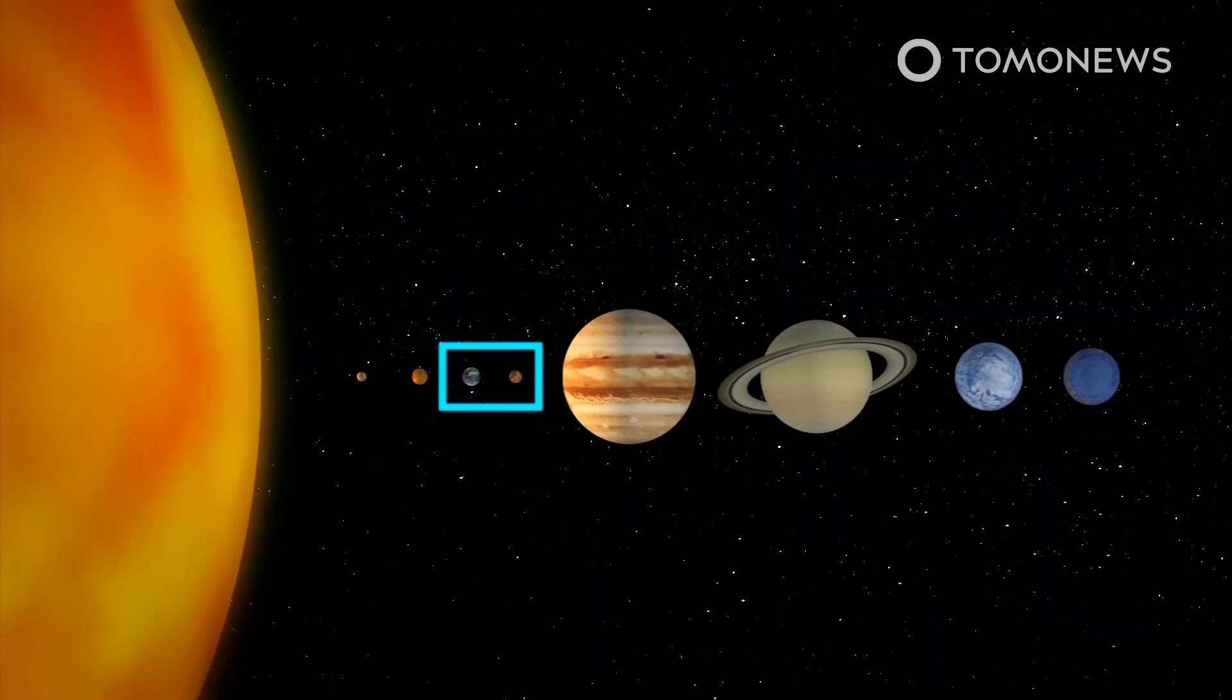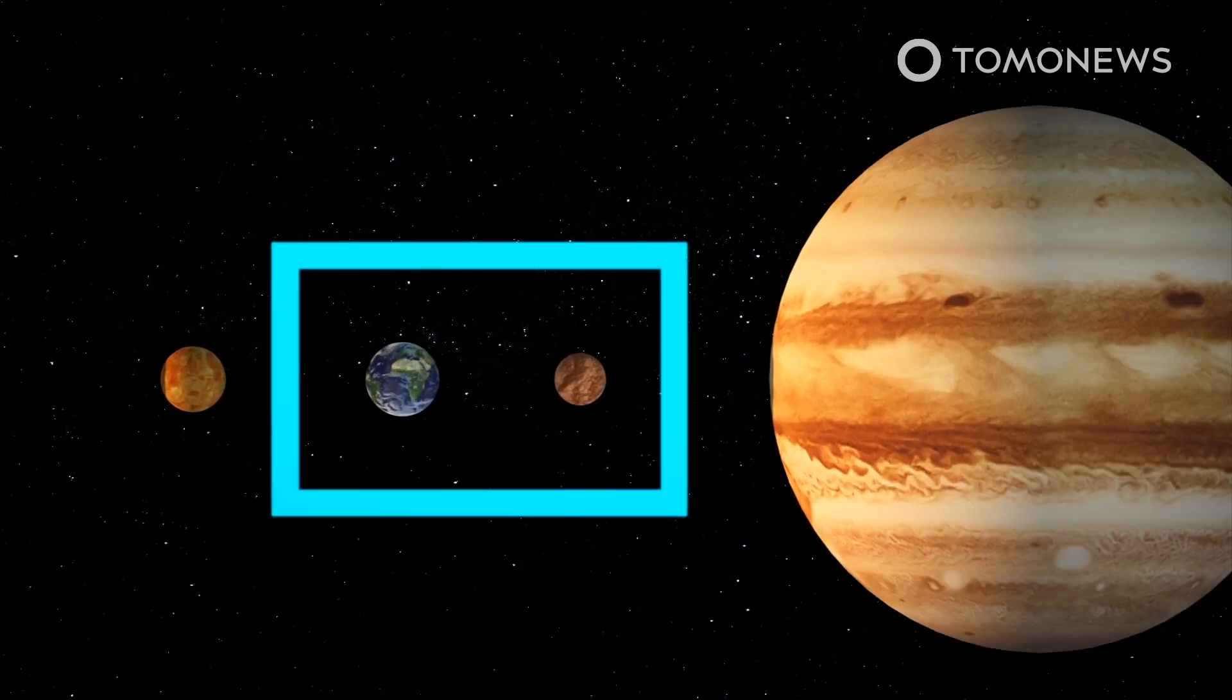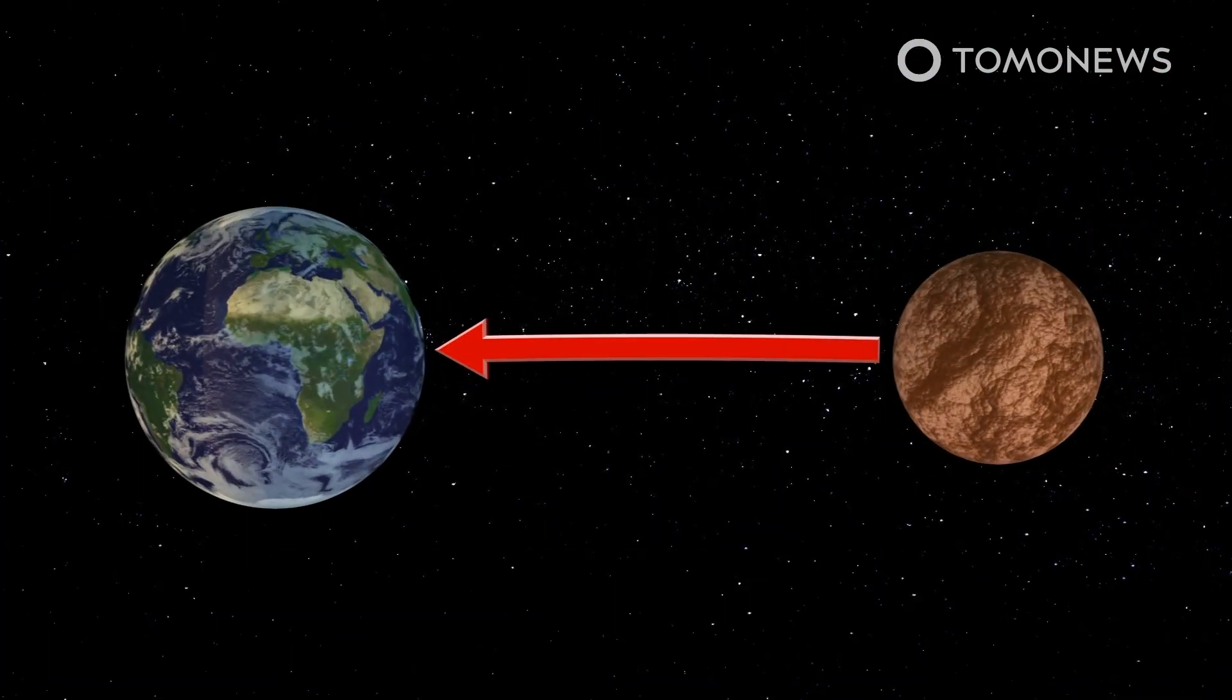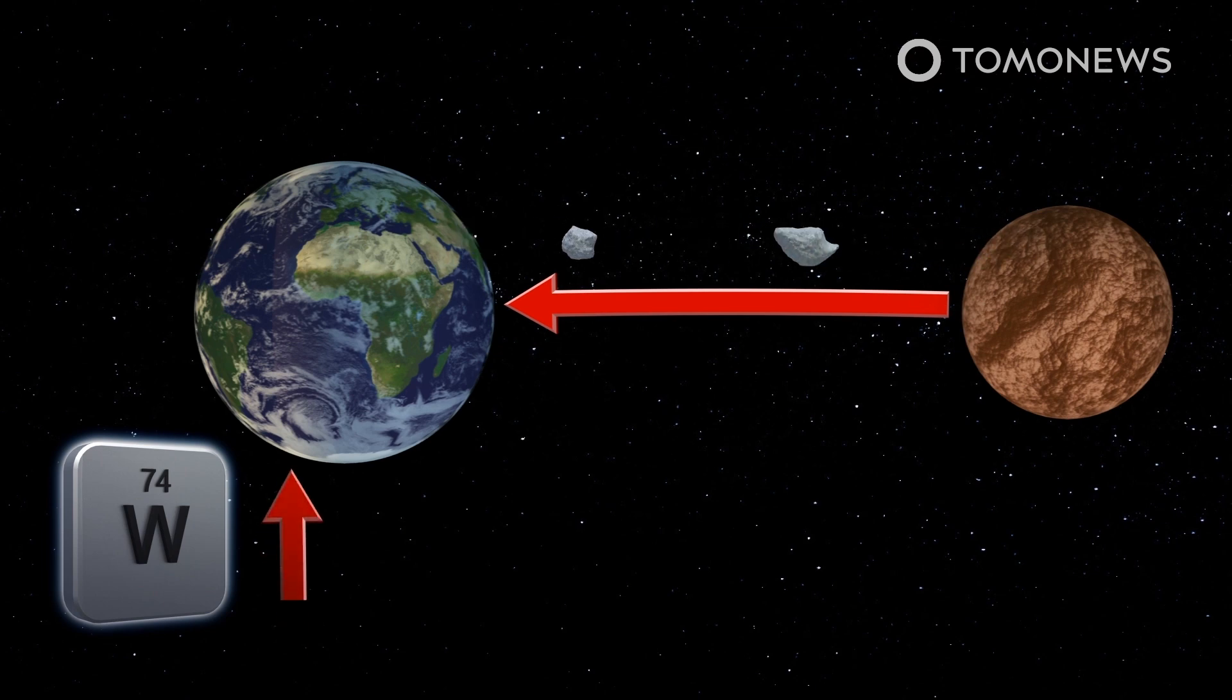Subsequently, when later collisions on Mars sent meteorites to Earth, the debris would have contained an uneven quantity of tungsten. Using the new models, the paper's authors claim that Mars may have taken 20 million years to become fully formed.